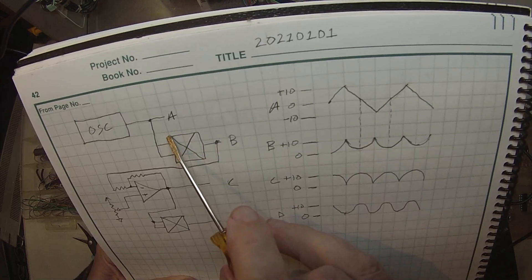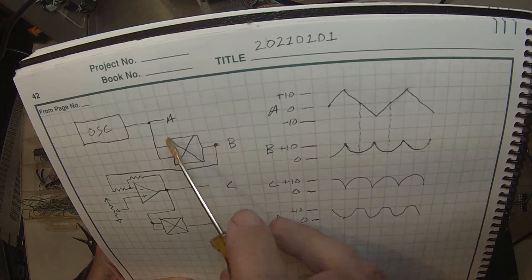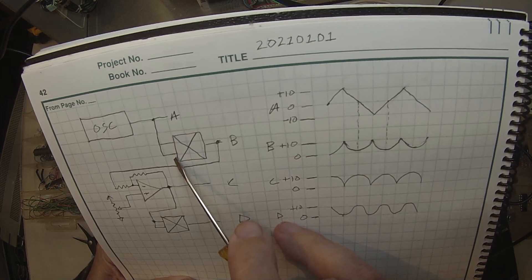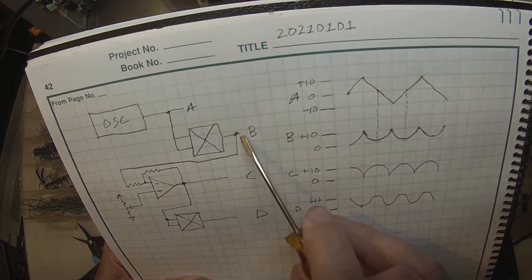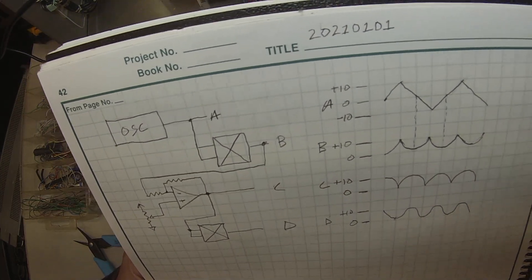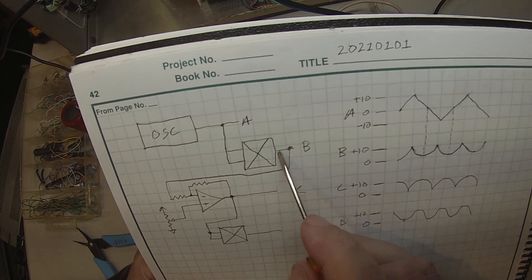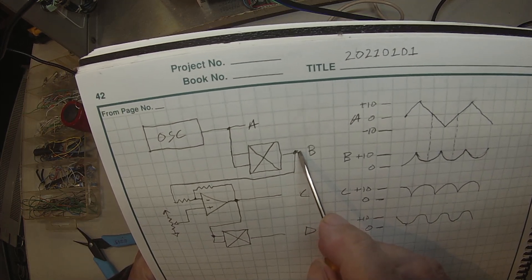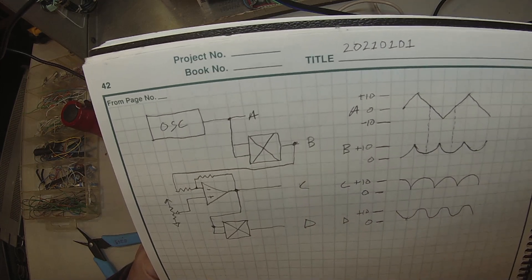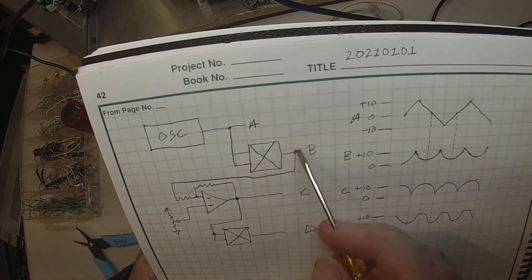Now a multiplier can only take like 10 volts in. Well, 10 volts times 10 volts would be 100 volts at the output, so multipliers typically have the output as one-tenth of what the true answer is. So in this case, 10 volts times 10 volts would be 10 volts.